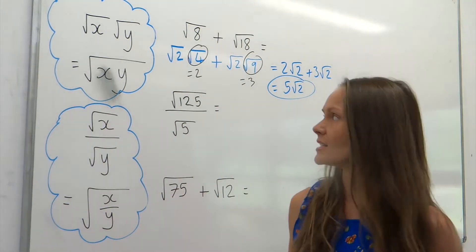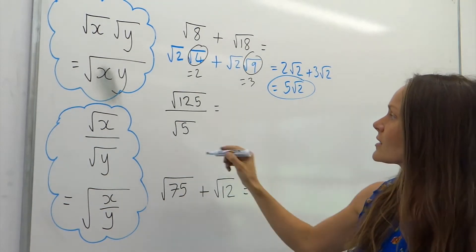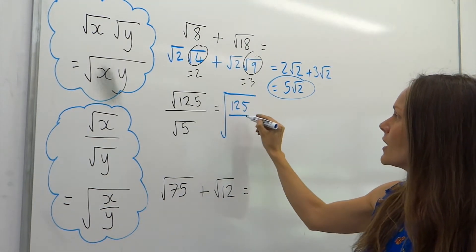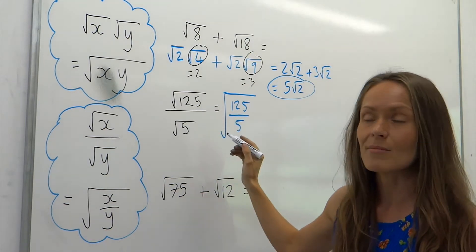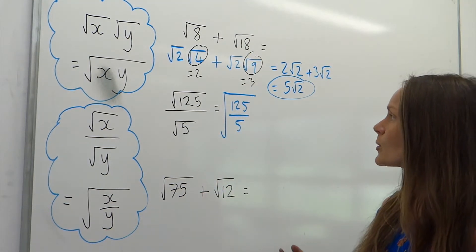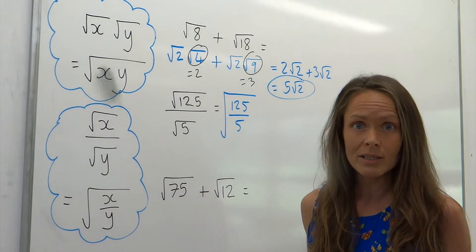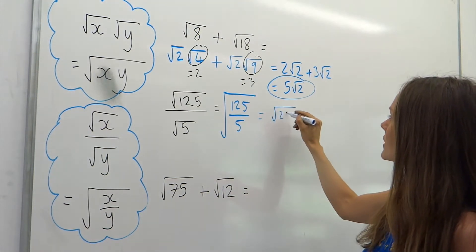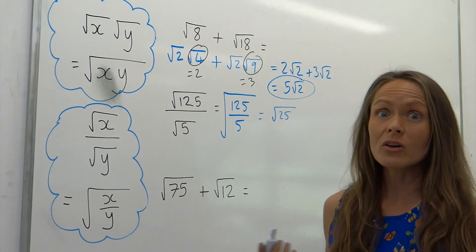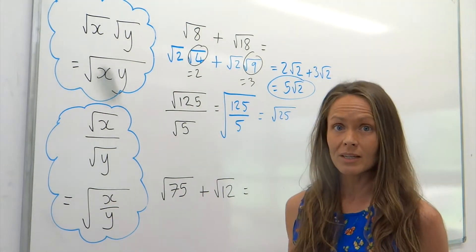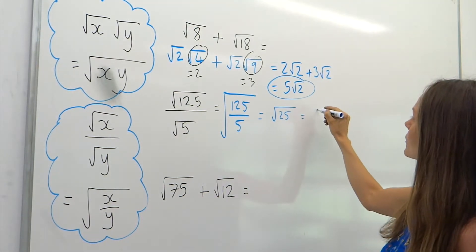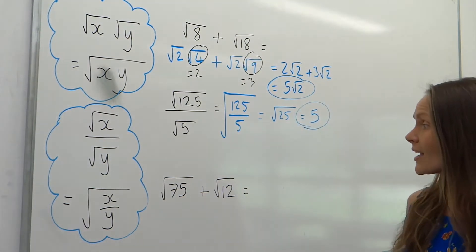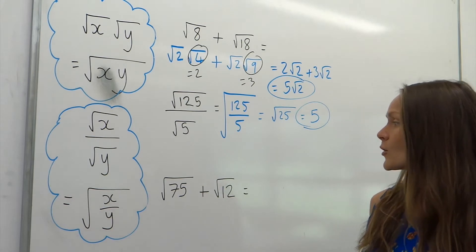For this one I'm going to use the division rule. This can be rewritten as the square root of 125 divided by 5. 125 divided by 5 is 25, so it's the same as square rooting 25. Because 25 is a square number we can square root it, and the square root of 25 is just 5.